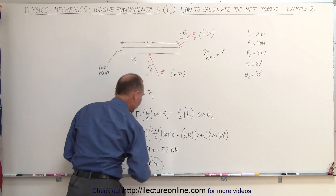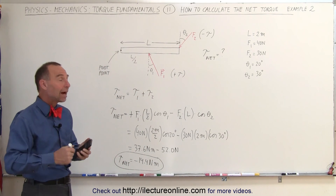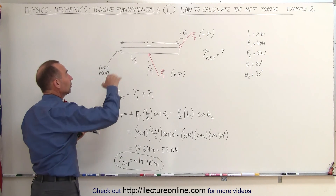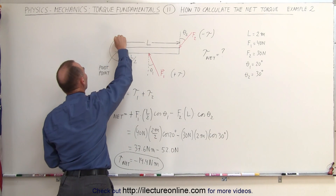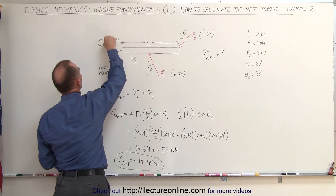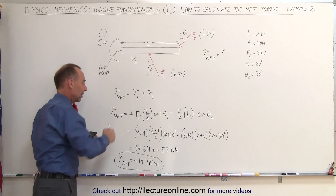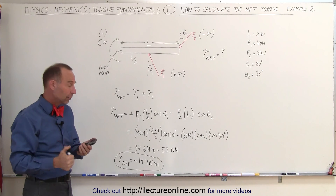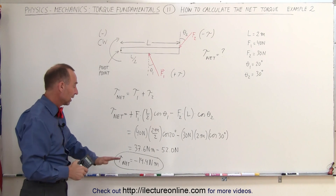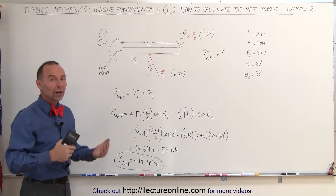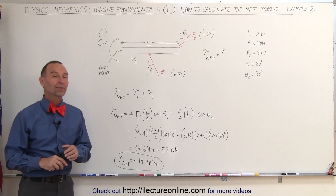Now notice — what does the negative sign indicate? Well, negative means that we have a clockwise torque. Both these forces acting together still cause a clockwise torque. It's clockwise, therefore it's a negative torque, therefore it acts into the board. So here we do want to take into account that it's a clockwise torque, and that the net torque is negative relative to the direction of the torque. And that's how it's done.